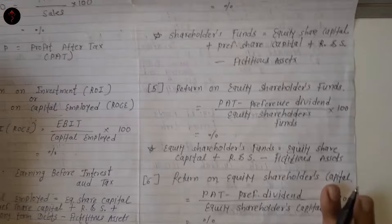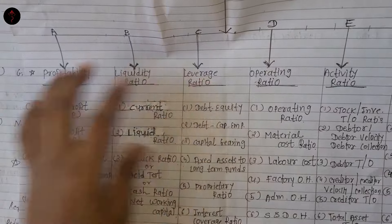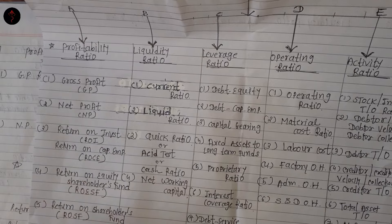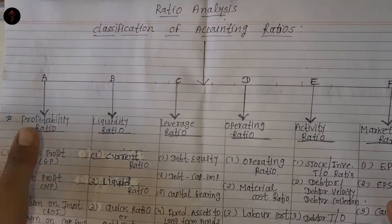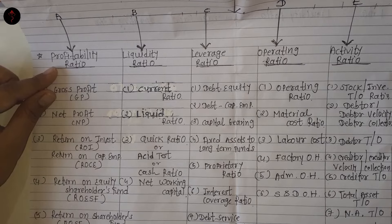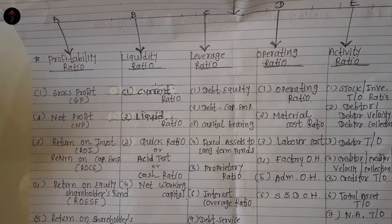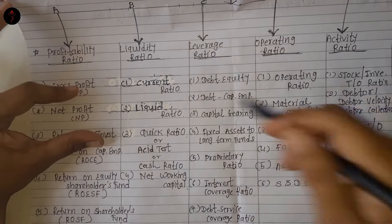यह सारे ratios percentage में आएंगे. So our first line of ratio — GP, NP, ROI or return on capital employed, return on shareholders fund, return on equity shareholders fund, and return on equity capital — यह खत्म हुए. Profitability ratio आपको दिखाता है कि आपने अपने business में कितना profit कमा रहे हो. Ratio इसलिए भी use होता है for estimation, और इसलिए budget और budgetary control में भी use किया जाता है. Ratio management decision making के लिए बहुत ज़्यादा important है.